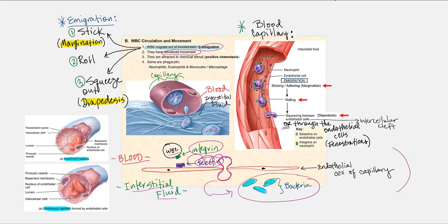Leukocytes can also squeeze through the endothelial cell itself if it happens to be a fenestrated capillary. In another image showing the neutrophil, the green boxes represent integrin on the neutrophil, and the endothelial cells display selectin. When integrin and selectin stick together through margination, the neutrophil rolls and looks for an opening. When it finds one, it squeezes right through — diapedesis. This, of course, is a continuous capillary.